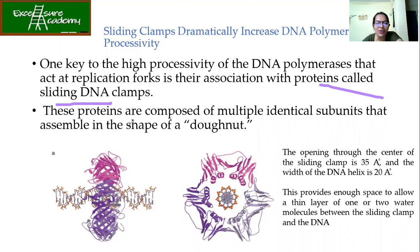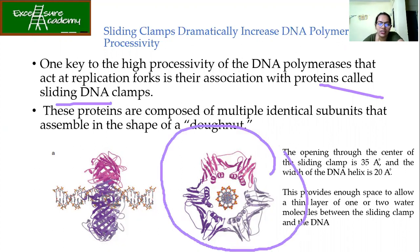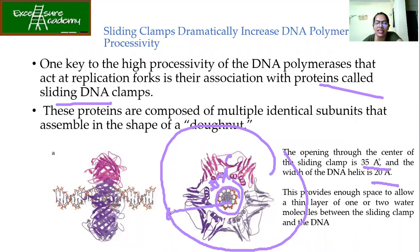These sliding clamp proteins are composed of multiple identical subunits assembled in the shape of a donut. You can see the structure of the sliding clamp here - this is the side view, and at the center you can see the DNA. The opening through the center of the sliding clamp is 35 angstroms, and we know that the DNA diameter is around 20 angstroms, so this 35 angstrom center accommodates the 20 angstrom DNA.